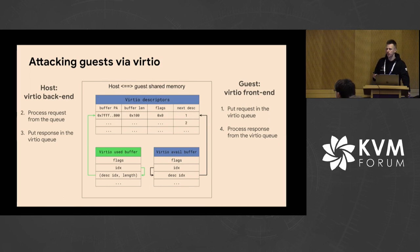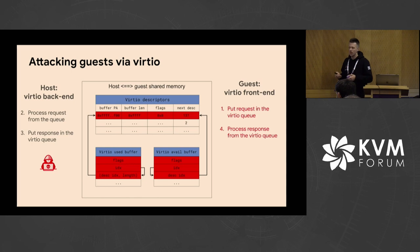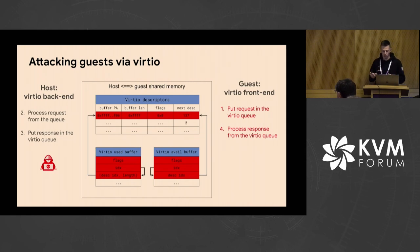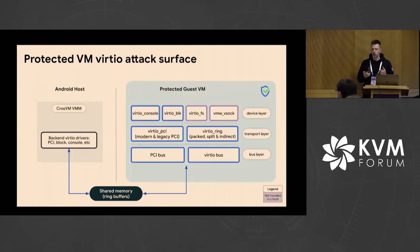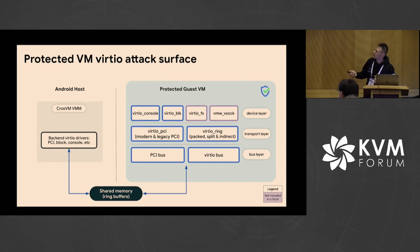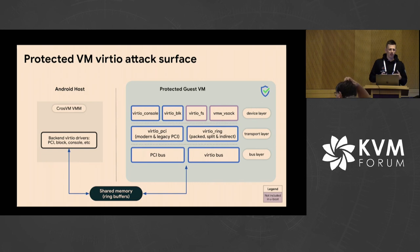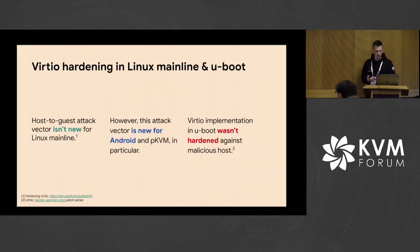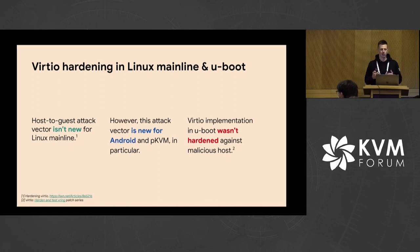As we can see, there is a lot of pointer arithmetic here, a lot of signed and unsigned integers, and conversion from little-endian to big-endian. This is generally error-prone code. The whole protocol is also very non-trivial, and if the attacker is able to modify those values with full write access, they can exploit vulnerabilities in the guest, get code execution, or extract confidential data. Here is how the VirtIO stack looks in the protected guest: we have VirtIO console, VirtIO block, VirtIOFS, and VSOC devices. The boxes highlighted in purple are not present in U-Boot but are present in GKI. Everything works on top of the VirtIO PCI transport, and there is the VirtIO ring driver for handling ring buffers. For Linux mainline, host-to-guest is not a new attack vector — there are hardening patches from Intel and other companies referenced at the bottom. However, this attack surface is new for Android and particularly for Android protected KVM. When we looked at the VirtIO implementation in U-Boot, it wasn't hardened against these attacks. Because of this engagement and fuzzing effort, a set of hardening patches was submitted and upstreamed to the U-Boot repository.